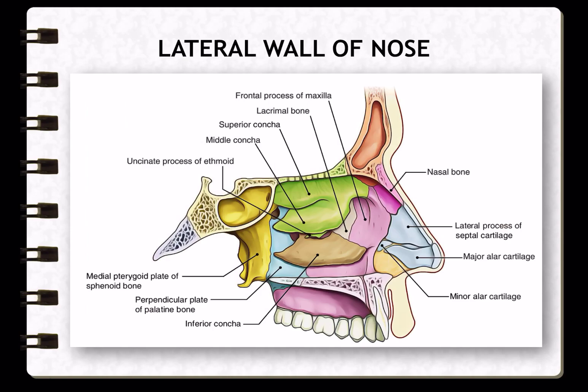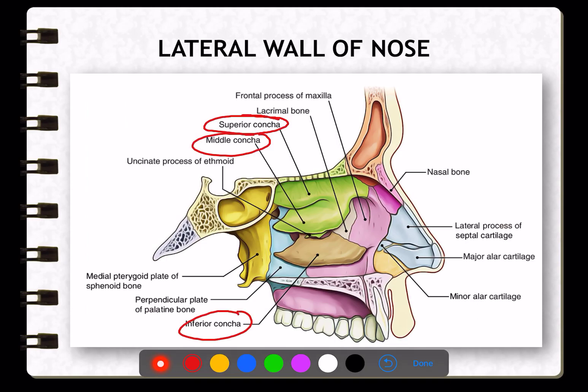The important things to keep in mind regarding the lateral wall of nose are the turbinates or the conchae. There are superior concha, middle concha, and inferior concha. The superior concha is the smallest, whereas the inferior concha is the largest of all three.